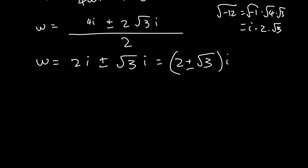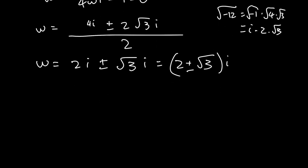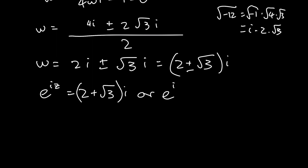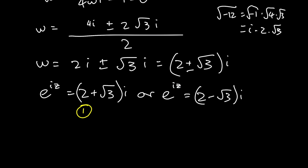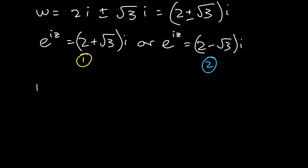Now we initially said that w was equal to e to the iz. So we have two equations: e to the iz equals (2 + √3)i, or e to the iz equals (2 − √3)i. Solving each of these will give us two different answers, so I'm going to do each one in a different color — this is equation 1, and this is equation 2.